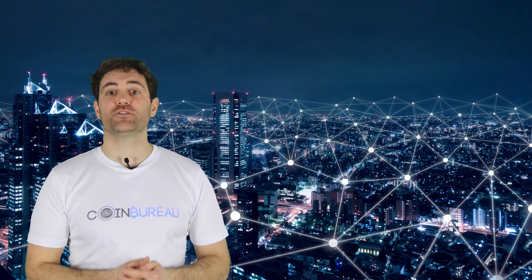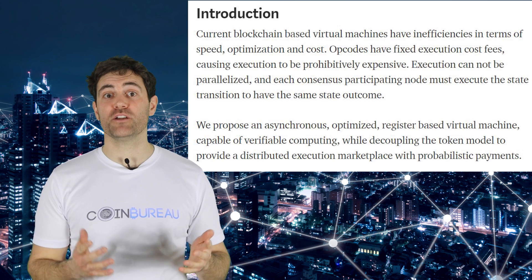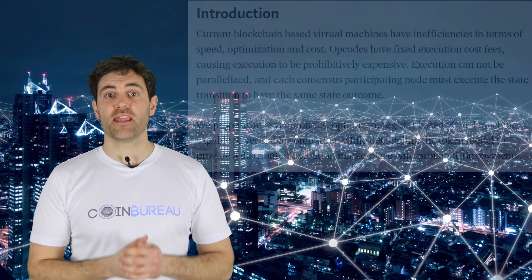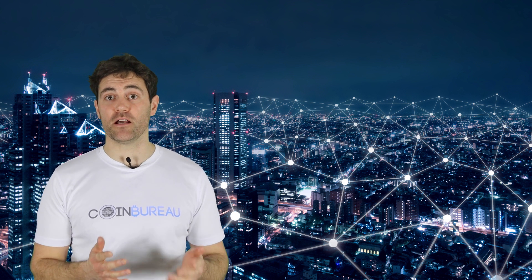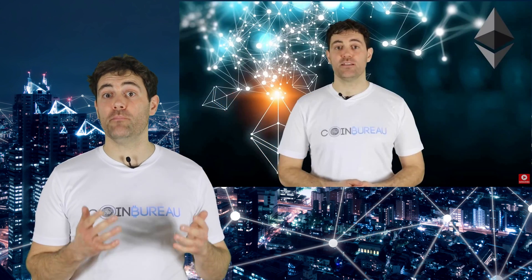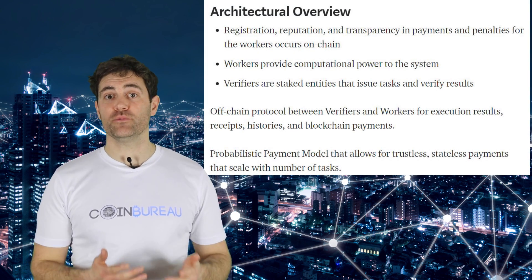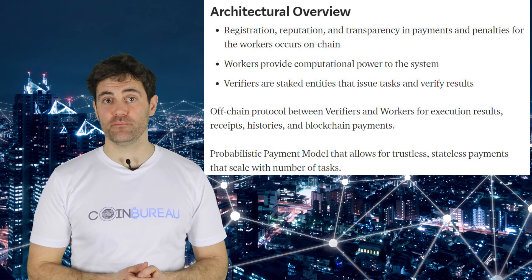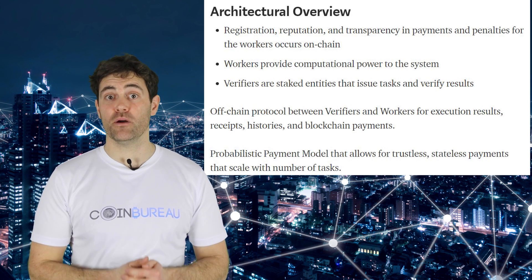One last thing I want to touch on is Fantom's virtual machines. Fantom argues that current virtual machines are inefficient, cost too much, and aren't optimized to run well on decentralized platforms. Additionally, with a virtual machine, users cannot parallelize execution, meaning nodes have to execute in their current state to create the same state results — something Ethereum 2.0 is actually trying to achieve with shard chains. Fantom is developing a virtual machine with better security, external code linking, scalability, and a well-defined library, offering core functionality to create a robust dApp ecosystem.